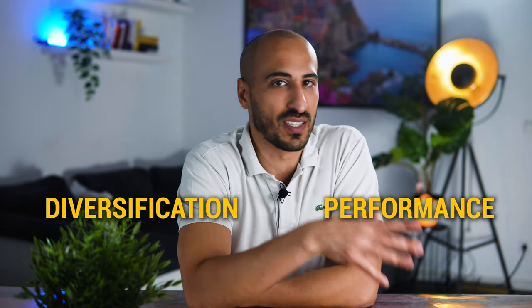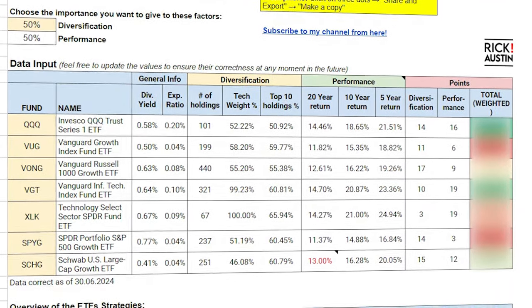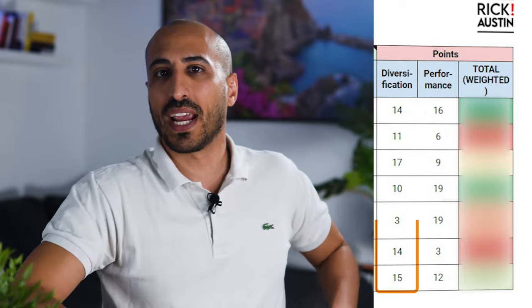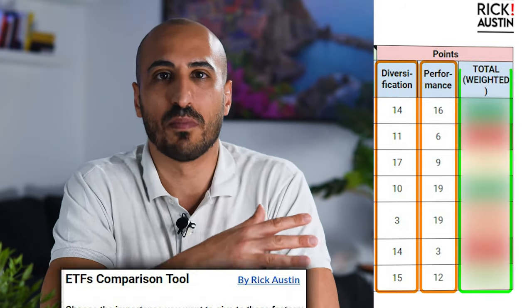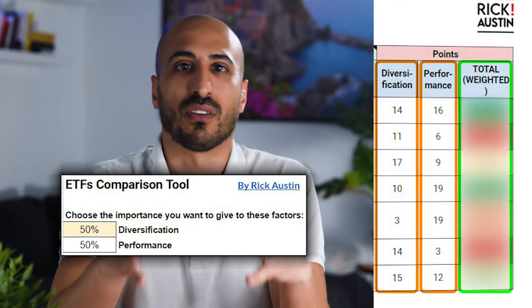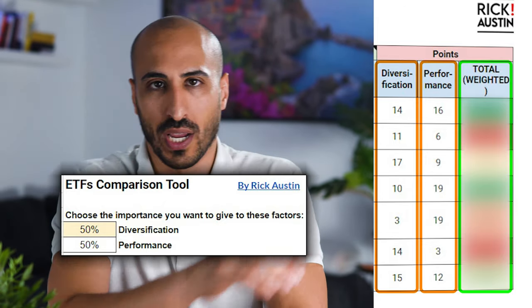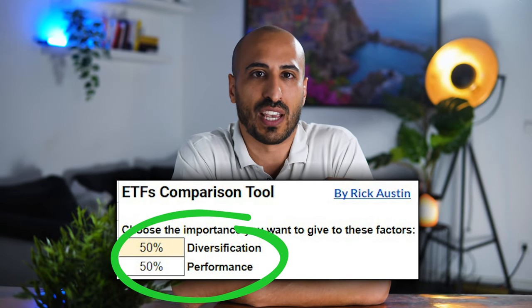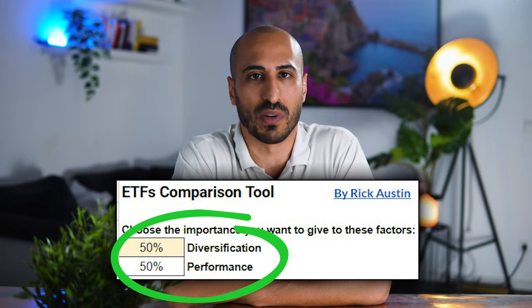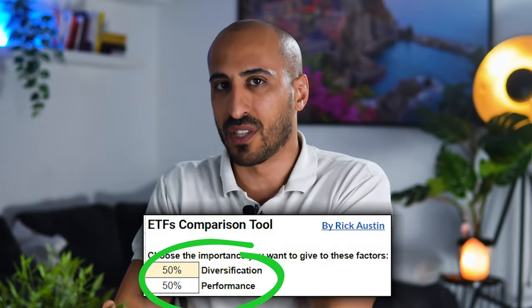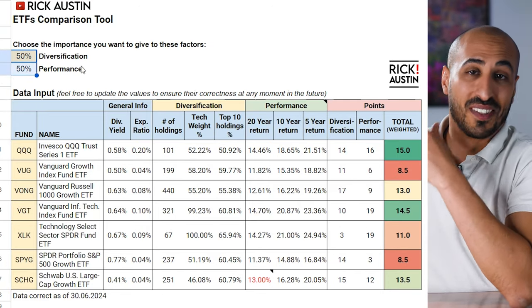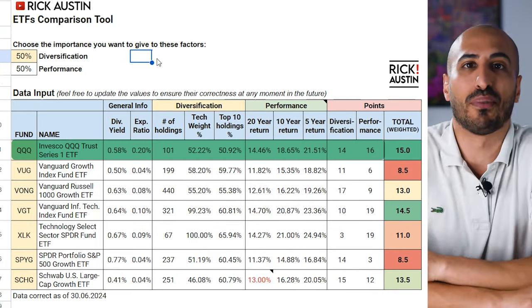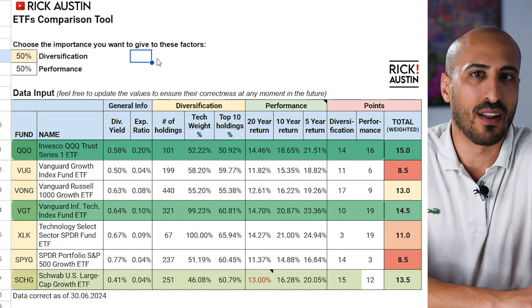It's hard to make an absolute decision without choosing how much diversification you want versus how much past performance matters to you. In the downloadable table, I used a points-based grading system that automatically assigns a diversification grade and a performance grade for each ETF, then weights them based on your risk tolerance. When you download the file, you just update the diversification and performance percentage values and the table calculates the results automatically. If you're unsure how much risk to take, keeping diversification and performance at 50/50 is probably the best default.